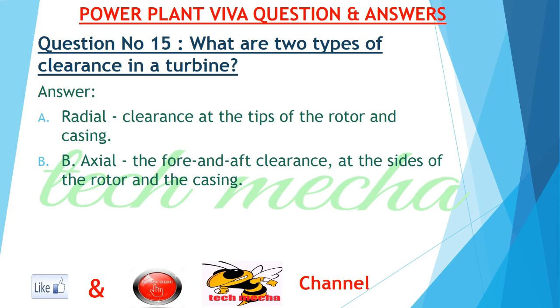Question number 15: What are two types of clearance in a turbine? A. Radial clearance at the tips of the rotor and casing. B. Axial clearance — the fore and aft clearance at the sides of the rotor and the casing.